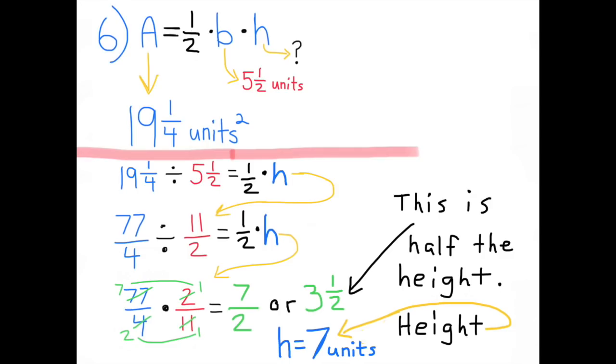The area of a triangle is half the base times the height. They've given us the area: 19-and-one-fourth units squared. They've given us the base: five-and-a-half units. We can figure out the missing area by seeing how many times five-and-a-half goes into 19-and-one-fourth. So 19-and-one-fourth divided by five-and-a-half will equal half of the height.